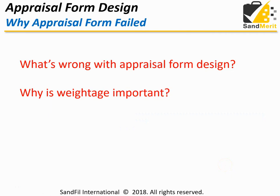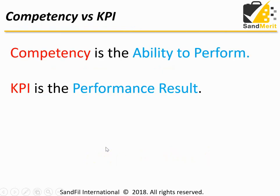So a good appraisal form — you actually need to have a weightage to indicate the importance of each competency or KPI. I will start with competency and KPI first. A lot of people mix up competency and KPI in their appraisal form. So before you start designing your new appraisal form, you need to understand what is competency and what is KPI. Competency is the ability to perform. KPI is the performance result.